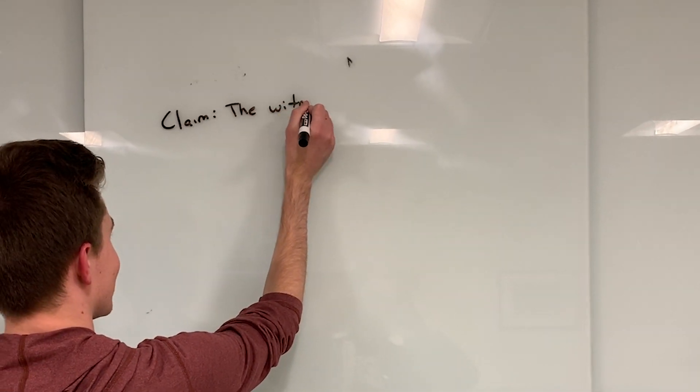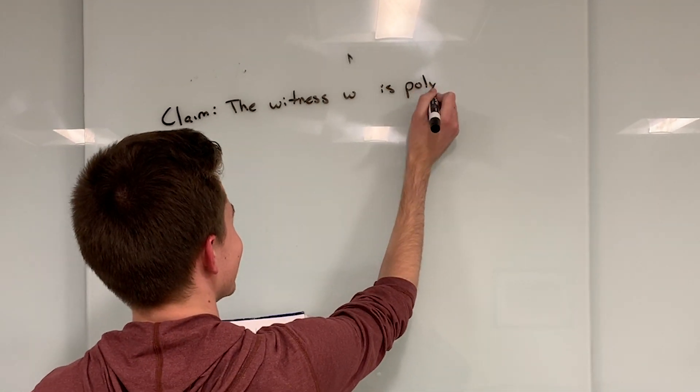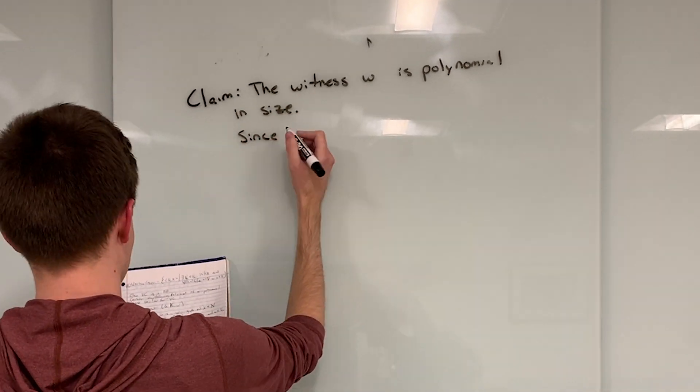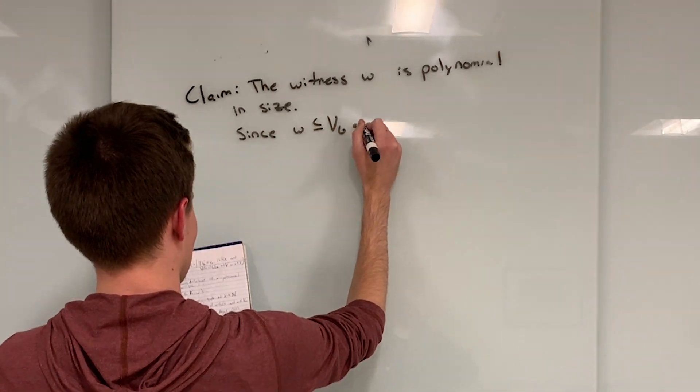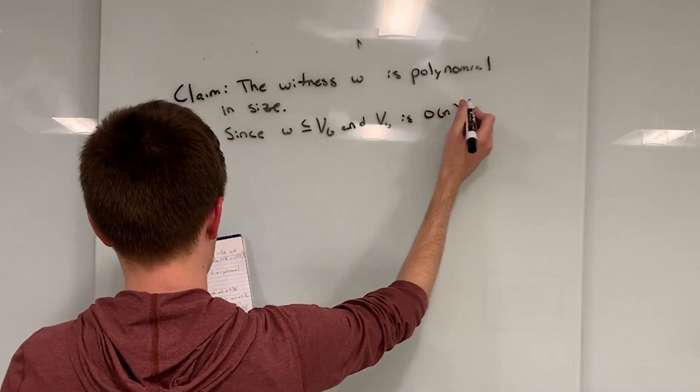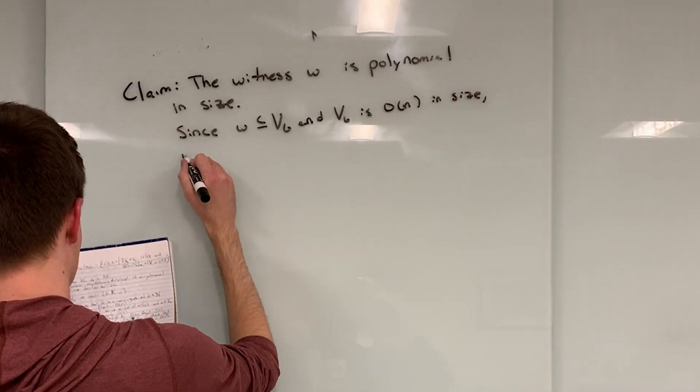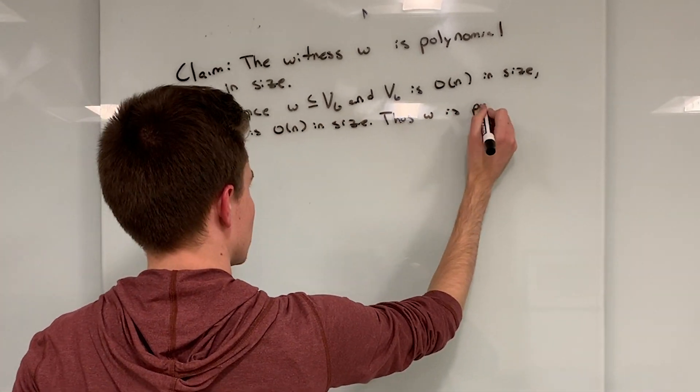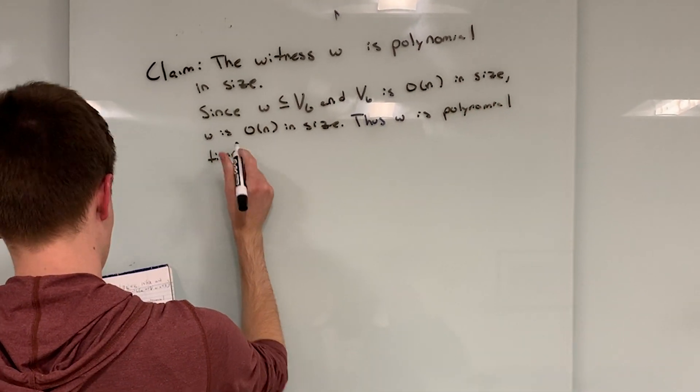For our verifier to be a known polynomial time running one, we must have W polynomial in runtime. We know W, the witness, is polynomial in runtime because W will be less than or equal to the vertices in G. G will be the size of the input, or big O of N. Therefore, W must be less than or equal to big O of N, and thus it must be polynomial in runtime.